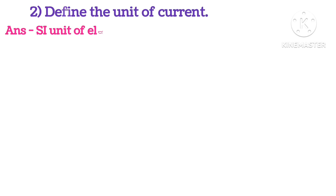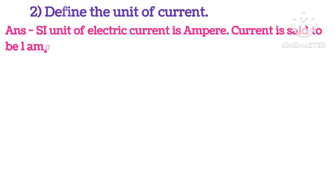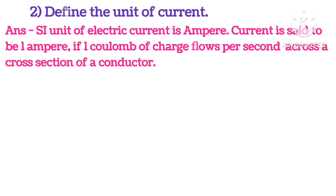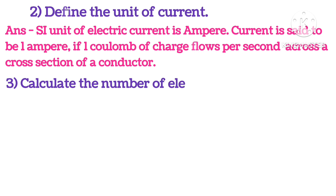Define the unit of current. The SI unit of current is ampere. Current is said to be 1 ampere when 1 coulomb of charge flows per second across the cross-sectional area of a conductor.